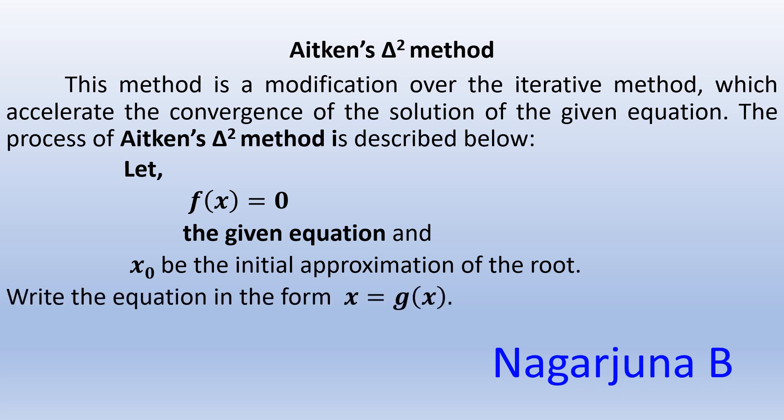Write down the equation in the form x = g(x). Using the given equation, you need to convert it into a form such that x = g(x). That means on the left-hand side you should have only the x term, and all remaining terms should be on the right-hand side, which we consider as g(x).